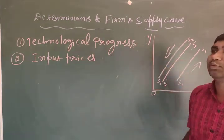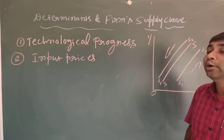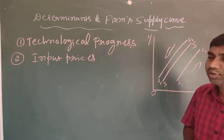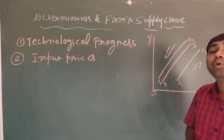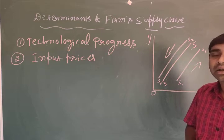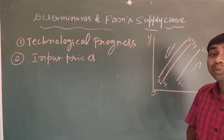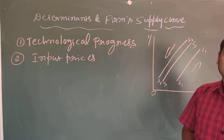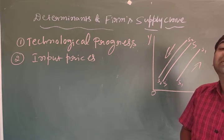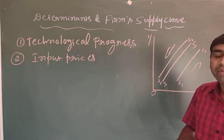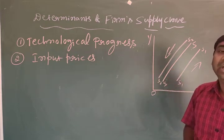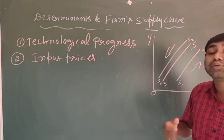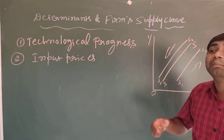What is the meaning of technological progress? With every improvement in technology, it plays a very important role in the production of the commodity. If the technology is good, we can produce more goods and services. If the technology is not good, we cannot produce as many goods and services.